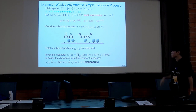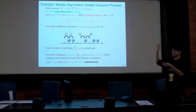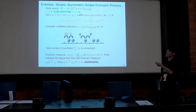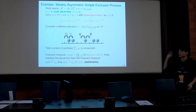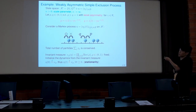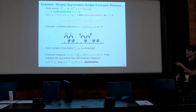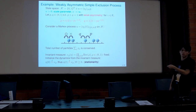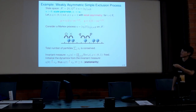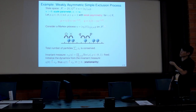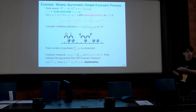As a warming-up example, I'd like to introduce the weakly asymmetric simple exclusion process, which is a kind of particle system. We consider the state space {0,1}^Z and denote elements by eta. Let n be a scaling parameter which tends to infinity. The dynamics can be described as follows: each particle jumps to the right or left with rate p or q respectively, and we introduce weak asymmetry so that the difference between p and q is given by one over square root of n.